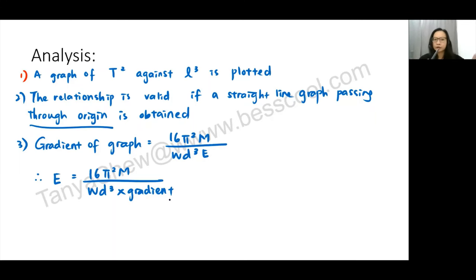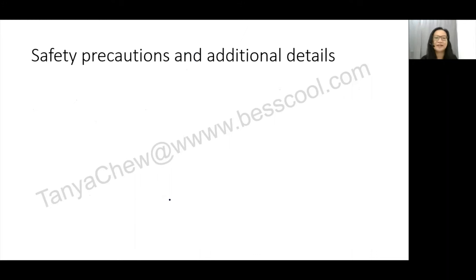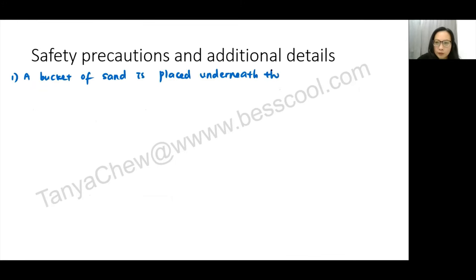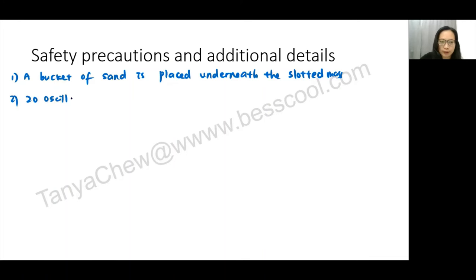Now for safety precautions and additional details — six marks. The first safety precaution: prepare a bucket of sand placed underneath the slotted mass in case it falls. The second precaution: 20 oscillations are taken rather than just one.